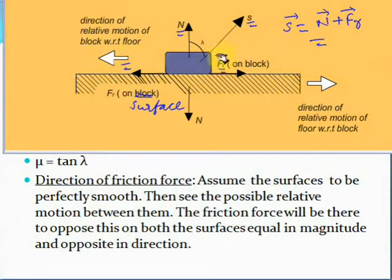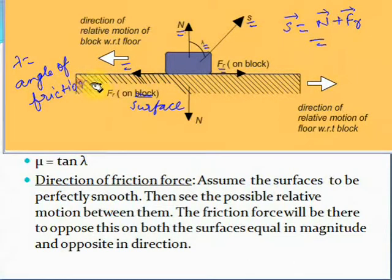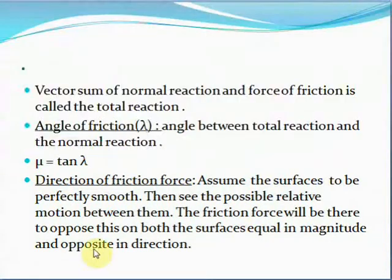If the angle between the normal reaction and the total reaction is λ, then this angle λ is called the angle of friction. The coefficient of friction μ between the block and the surface is equal to tan λ. Now we will see how to find the direction of the friction force.